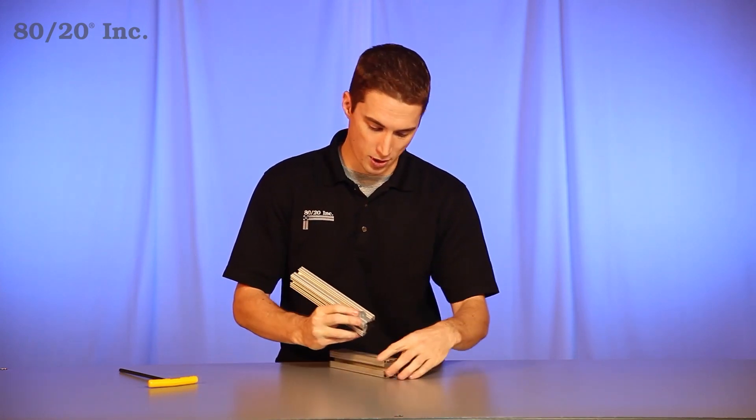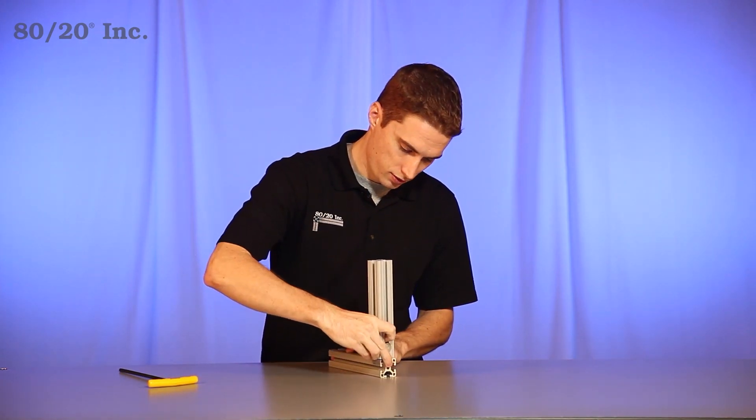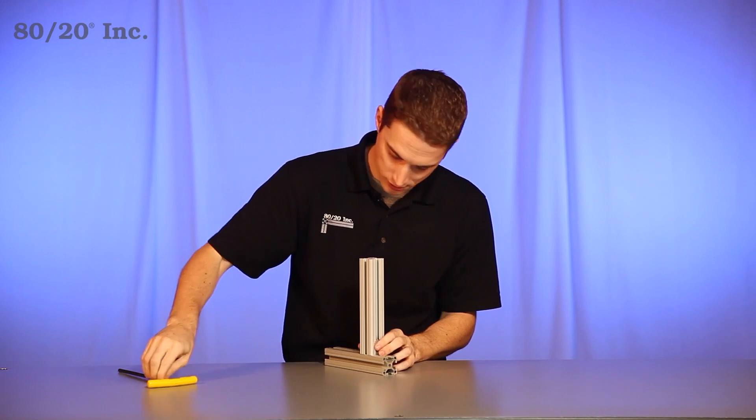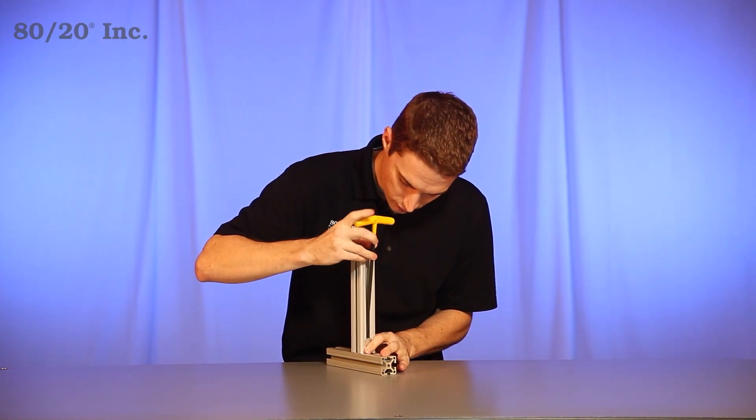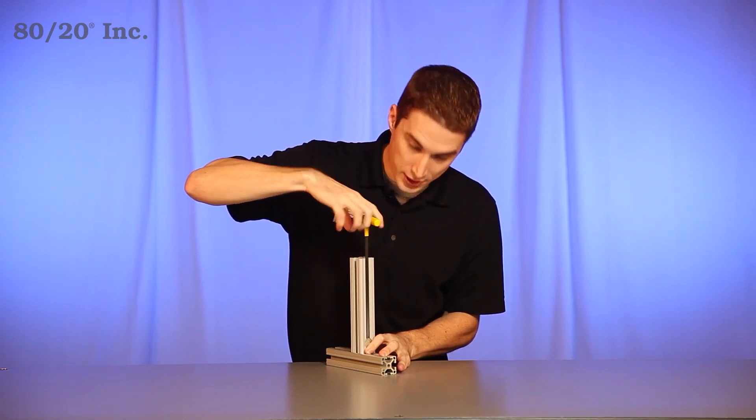Next, you'll want to take the second extrusion bar and slide the anchor fastener into it. Take your wrench, find your desired location, and tighten down firmly.